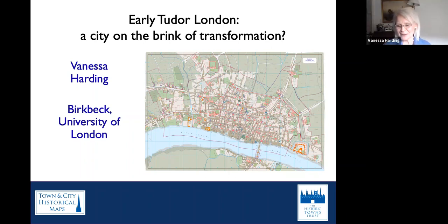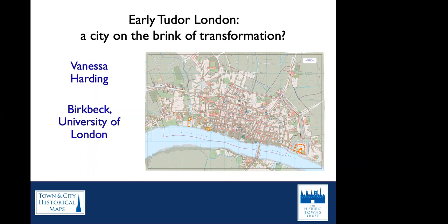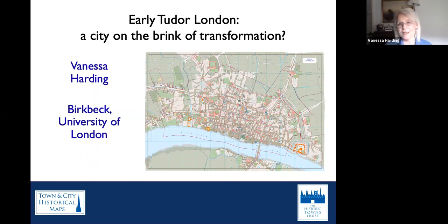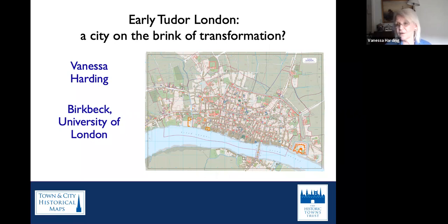Thank you very much, Helen, for that introduction, and thank you all for joining us this afternoon. In this talk, I'm going to be exploring the Historic Towns Trust map of London around 1520. What I want to do is discuss what London was like in 1520 and how it had evolved since around 1270 to 1300, which is the date of the Historic Towns Trust medieval London map. I'll discuss London 1520, say a bit about the 1520 map as an artifact and how it came to be made, and finally about the changes that swept over London in the century or so after the date of our early Tudor map and the possibilities of creating a new map to display these developments.